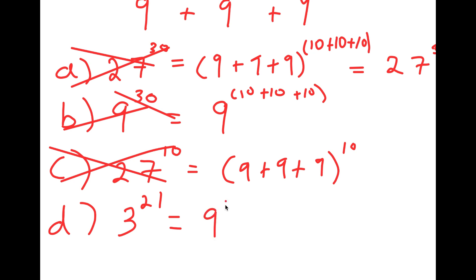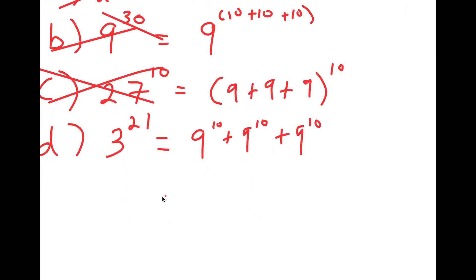So we first start with 9 to the power of 10 plus 9 to the power of 10 plus 9 to the power of 10. And I'm going to factor out 9 to the power of 10. So I get 9 to the power of 10 times 1 plus 1 plus 1, which is equal to 9 to the power of 10 times 3.